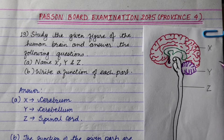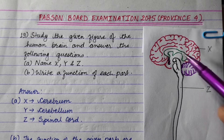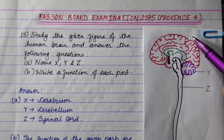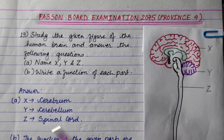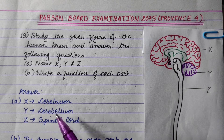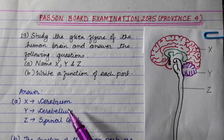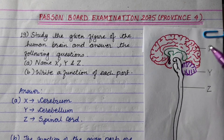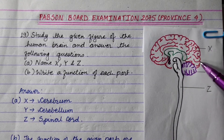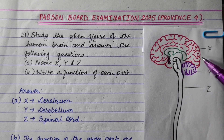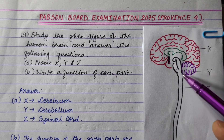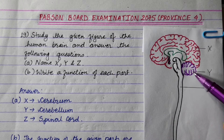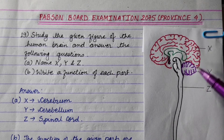Now we need to identify X. This is the largest part of the brain — X is the Cerebrum. This is the posterior part of the cerebral brain, and it is the second largest part of the brain.